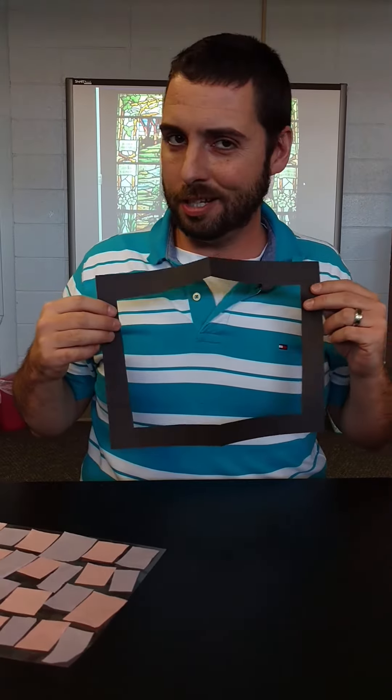Now that I have my frame, I'm going to apply some glue to one side of it. Once I have my glue on there, I'm going to flip it over. And I'm going to press it firmly, securely, to my stained glass window.